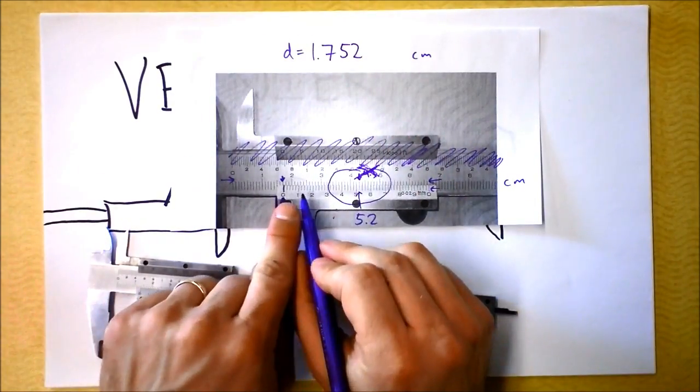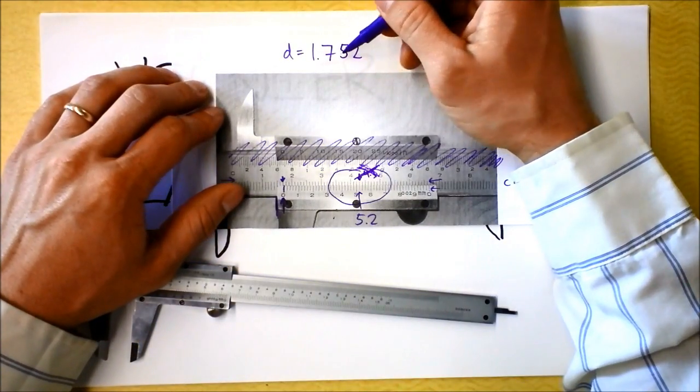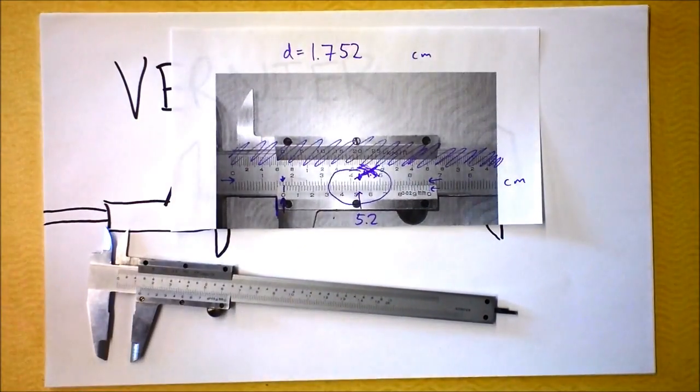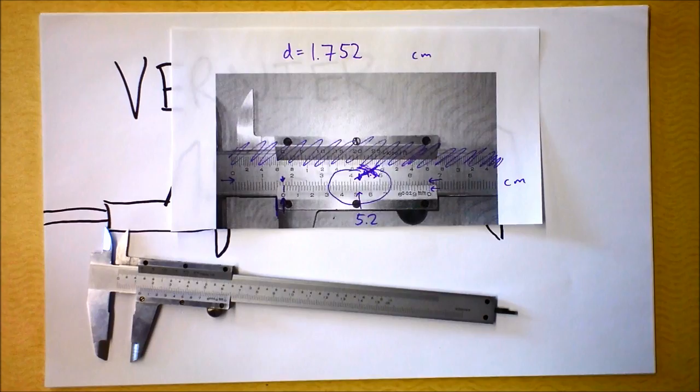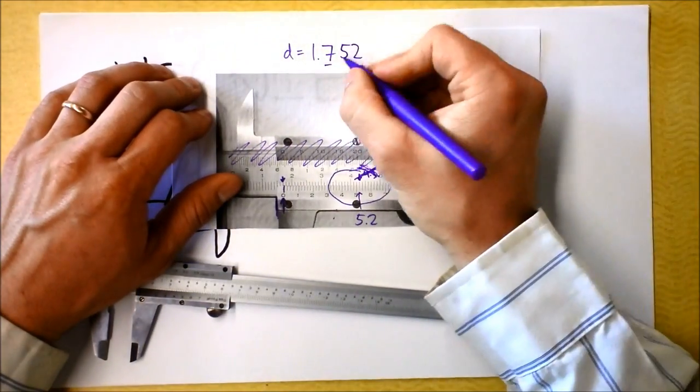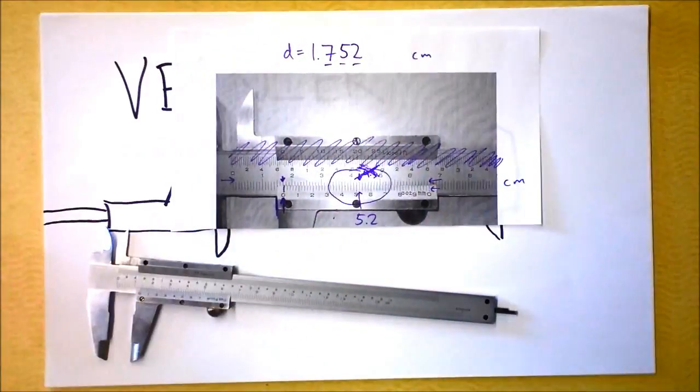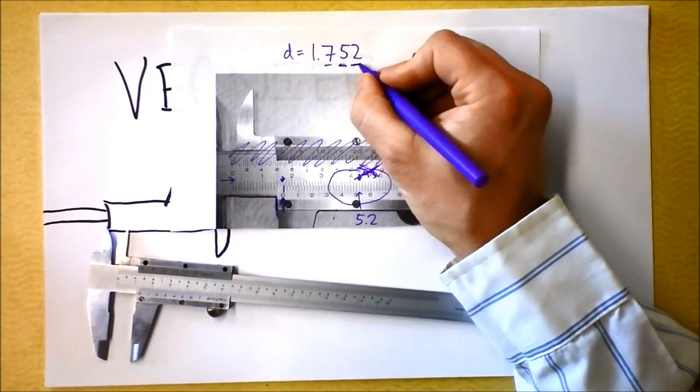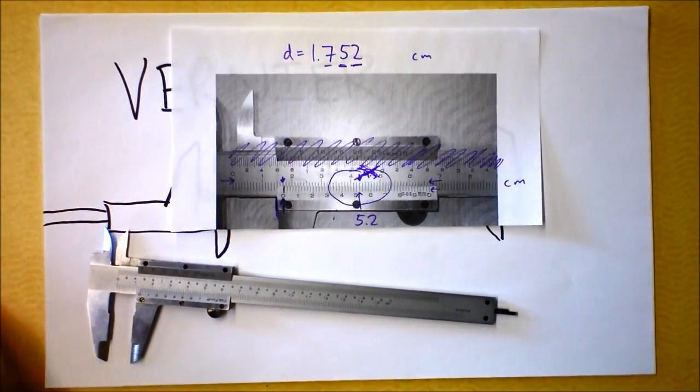When I had it spaced like that, I got a number that was 1.752 centimeters. That's incredibly accurate. That is really incredibly accurate. This is millimeters. That's tenths of millimeters. And that's hundredths of millimeters right there. So that's a very, very accurate tool.